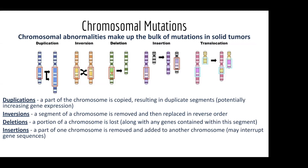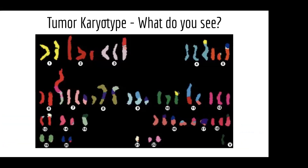There are activities you can do at home to wrap your brain around what a duplication, inversion, deletion, and insertion looks like. So — chromosomal abnormalities. What does that look like in an actual tumor or cancer?